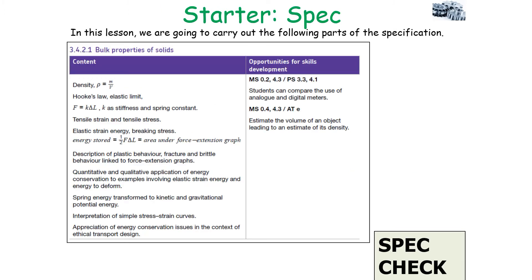This links into the following part of the AQA A-level physics specification: 3.4.2.1 — bulk properties of a solid, in particular elastic strain energy.